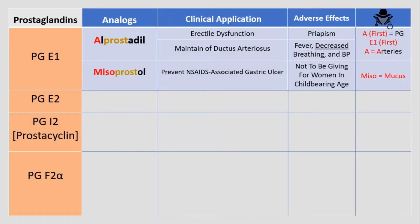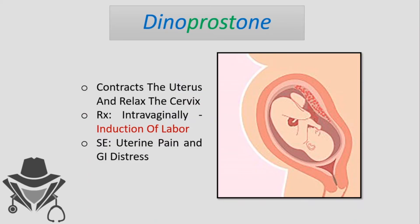We have finished prostaglandin E1 with alprostadil and misoprostol. Moving on to prostaglandin E2: dinoprostone is a prostaglandin E2 analogue. It contracts the uterus and relaxes the cervix, so it can be administered to induce labor. Side effects include uterine pain and GI distress. Mnemonic: 'di' means two in Latin, so dinoprostone goes with prostaglandin E2.